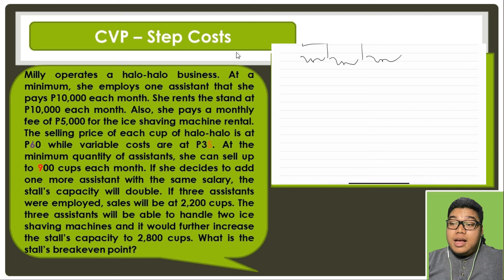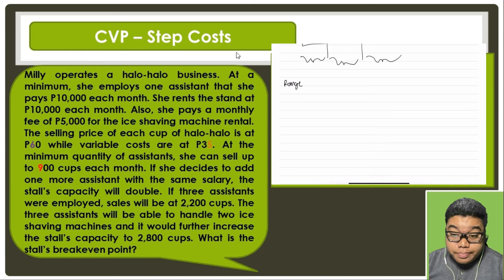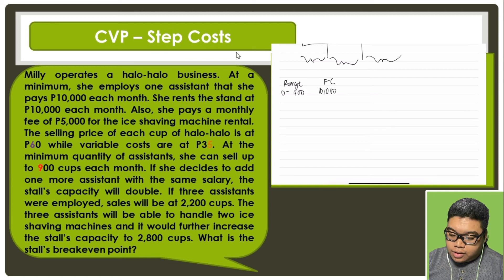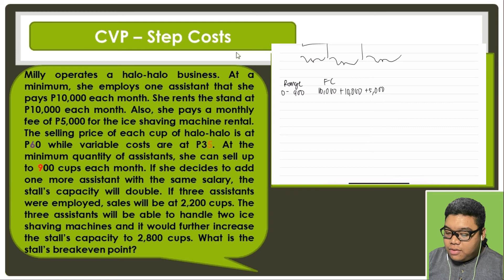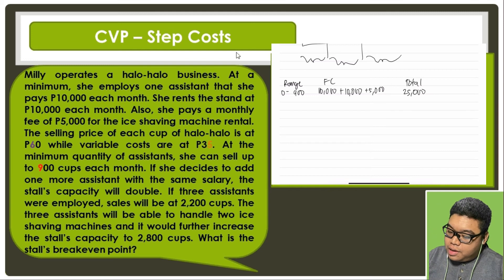To solve this, we need to plot our step fixed costs. The first range is 0 to 900 cups. Fixed costs here are one assistant at $10,000, plus the stand at $10,000, plus the ice shaving machine at $5,000, totaling $25,000. The contribution margin is $60 minus $35, which is $25.